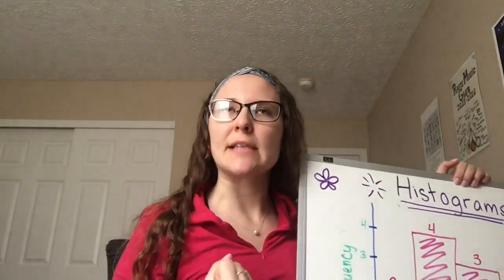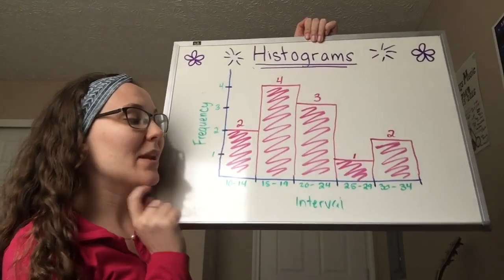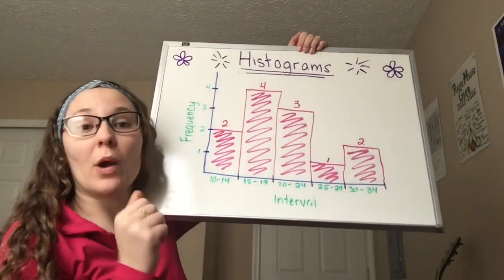You can also answer some interpreting questions. Interpreting sounds so scary, but it's fine. It's not that hard. This means something like the question, how many people are the age of 20 or above?